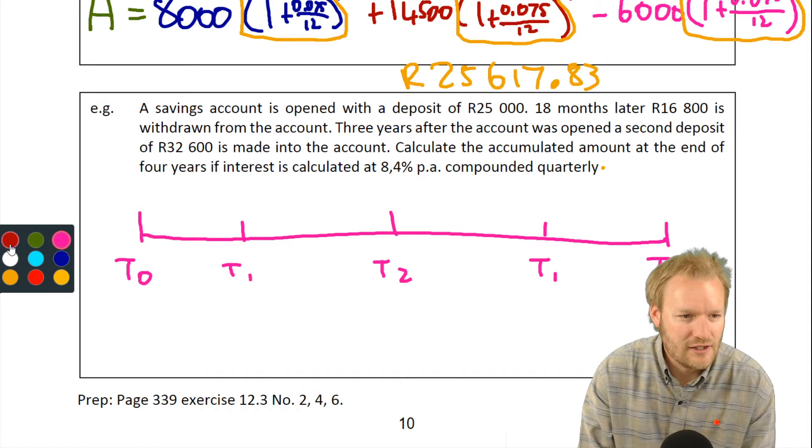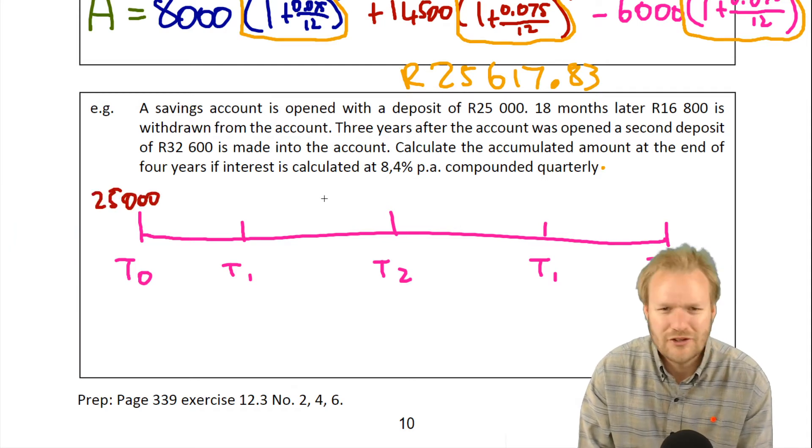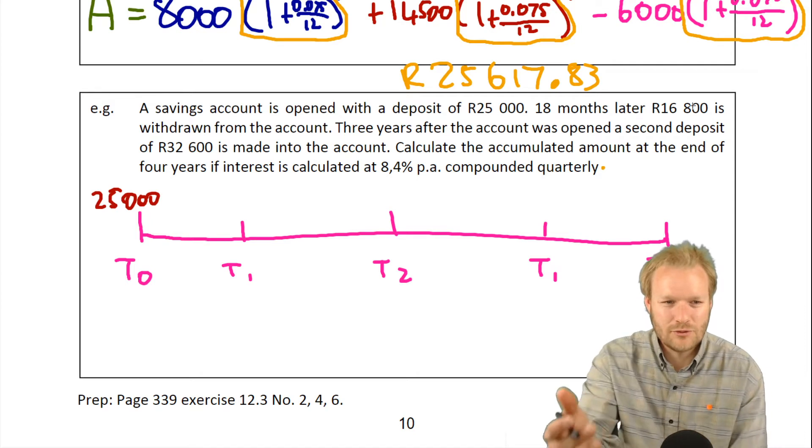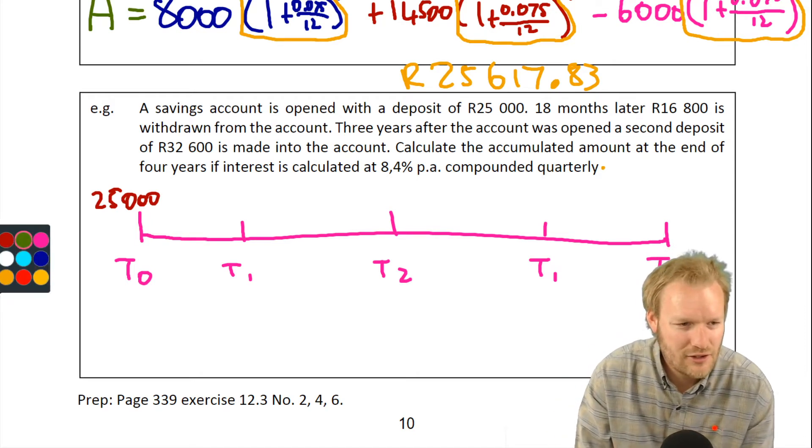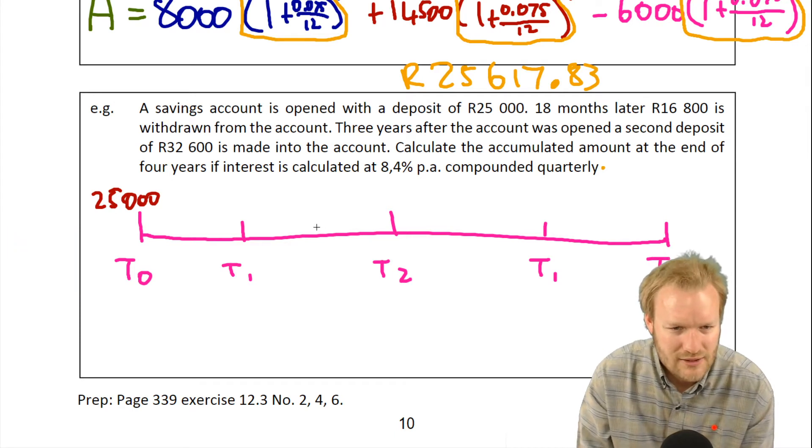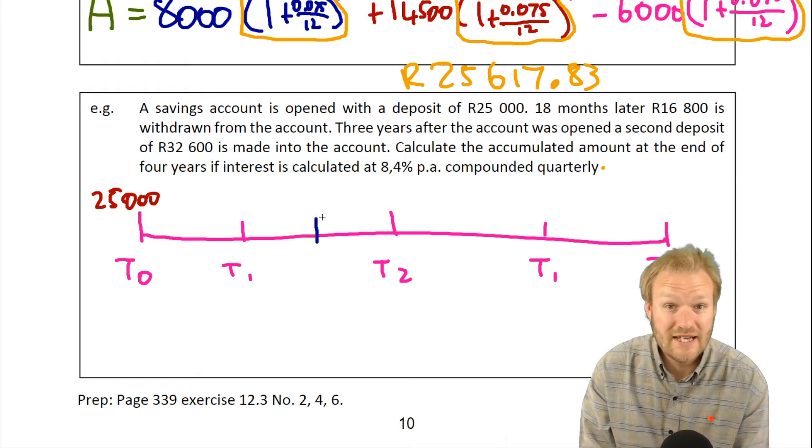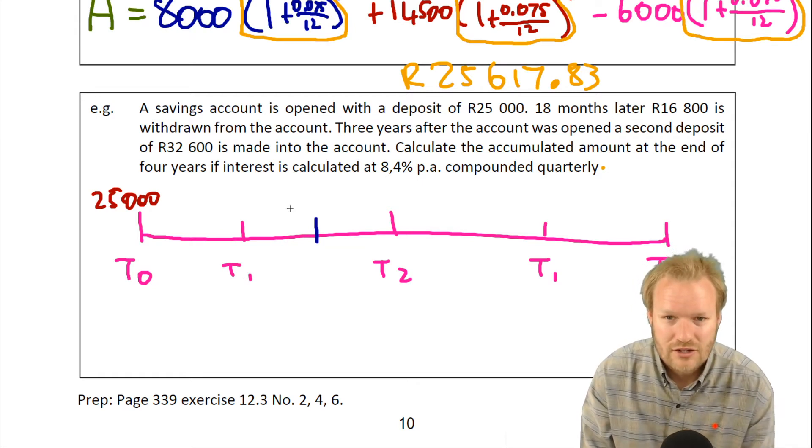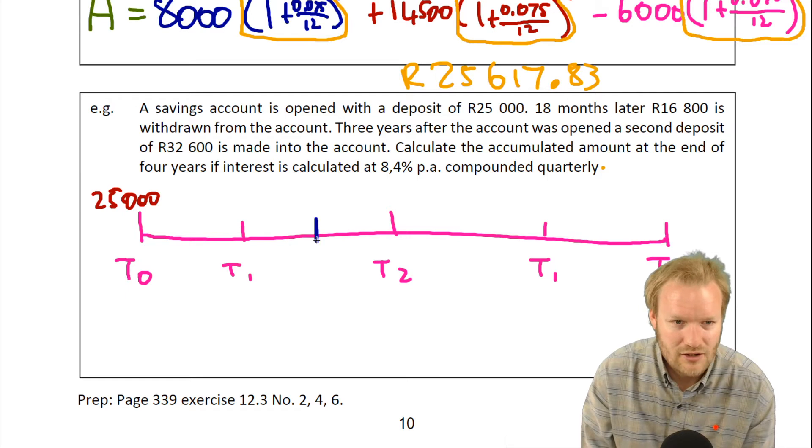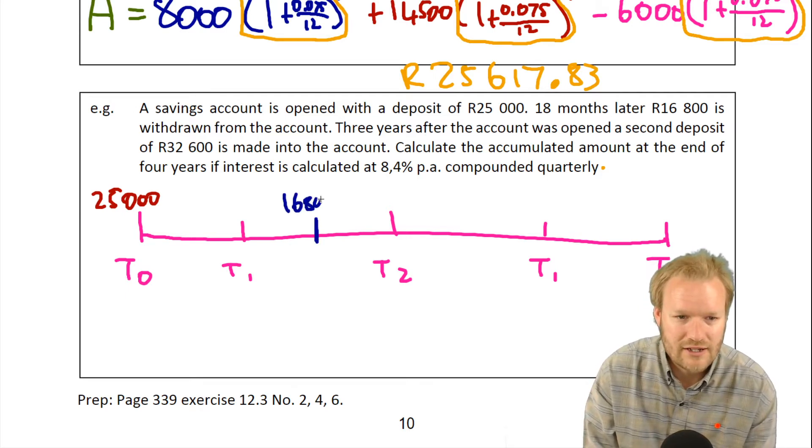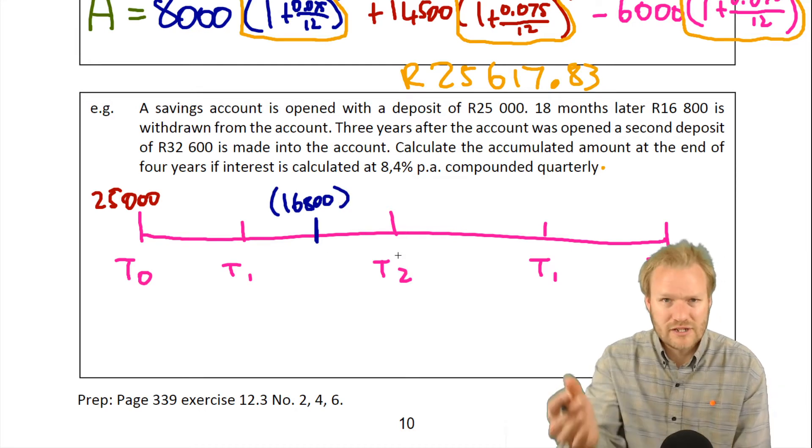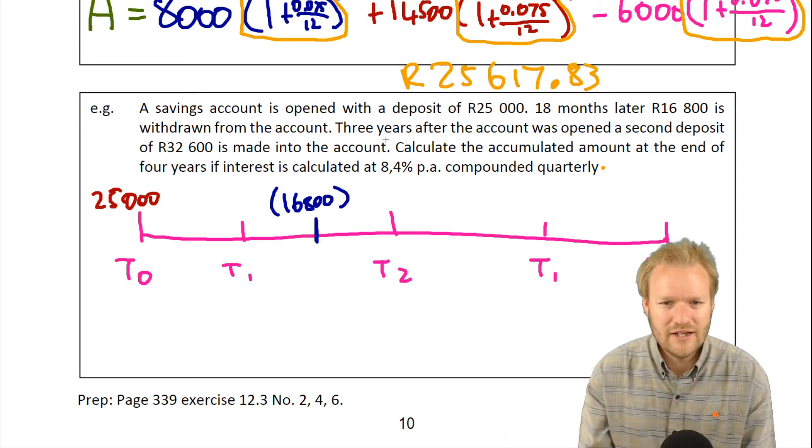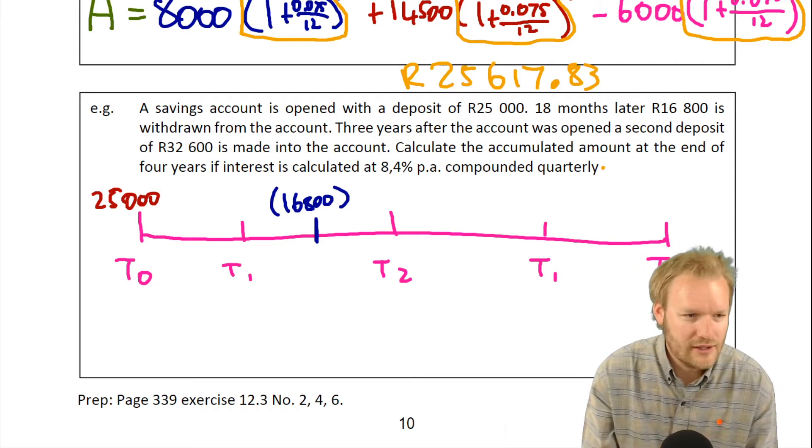So we put 25,000 rand in at T0—so exciting, it's like we've got so much money. 18 months later, 16,800 rand is withdrawn. 18 months—hang on, there's no 18 months, but 18 months is halfway between. It's not T18 though. Our Ts are years: T1 is the end of first year, T2 is the end of second year. So 18 months, we're going to indicate it here as halfway and withdraw 16,800. My suggestion is to put that in brackets to show we're taking it out.